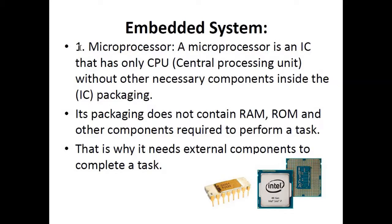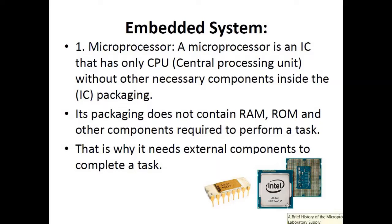Let's discuss them one by one. A microprocessor is an IC — integrated circuit — that has only a CPU (central processing unit) without other necessary components inside the packaging. This type of microprocessor is usually placed inside devices or embedded systems. This is a fourth generation Core i7 processor; its packaging does not contain RAM, ROM, and other components required to perform a task, which is why it needs external components to complete a task.